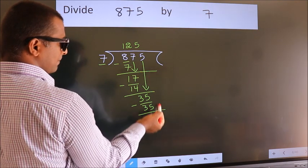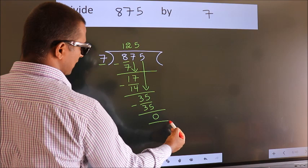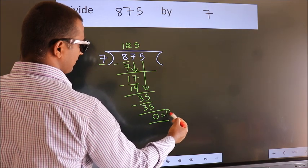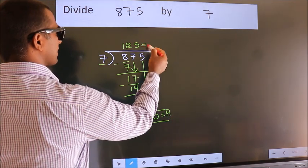No more numbers to bring down. So we stop here. This is our remainder. This is our quotient.